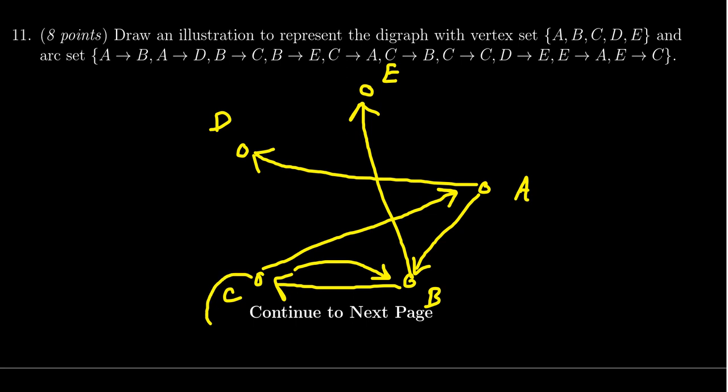Then you get one from D to E, you get one from E to A like so, and then you get one from E to C. I don't want to get it too messy, so I'm just going to draw it like that.